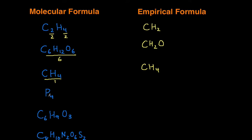Next example, P4. This one's a little tricky. What number can we divide this by to give us the lowest whole number? The answer is 4. We can divide 4 by 4 to give us 1. So in this case, the empirical formula of P4 is just P.